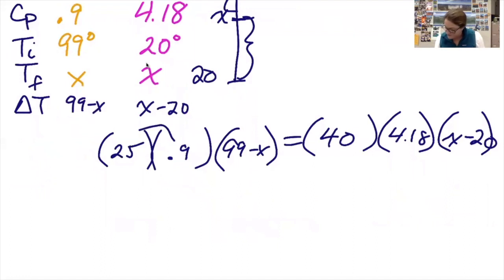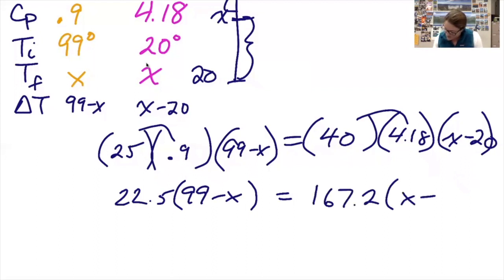I'm first going to multiply these guys together. 25 times 0.9 gives me 22.5 times the quantity 99 minus x. 40 times 4.18, 167.2 times the quantity x minus 20.